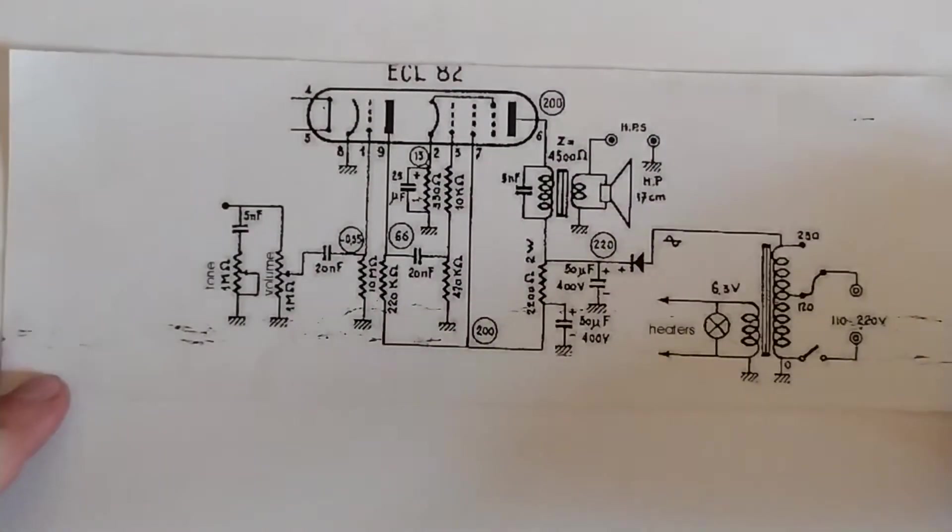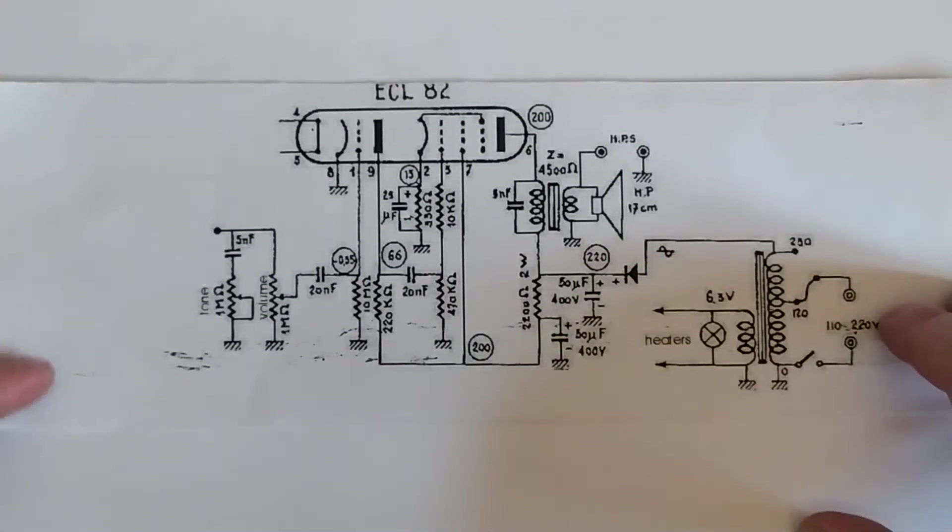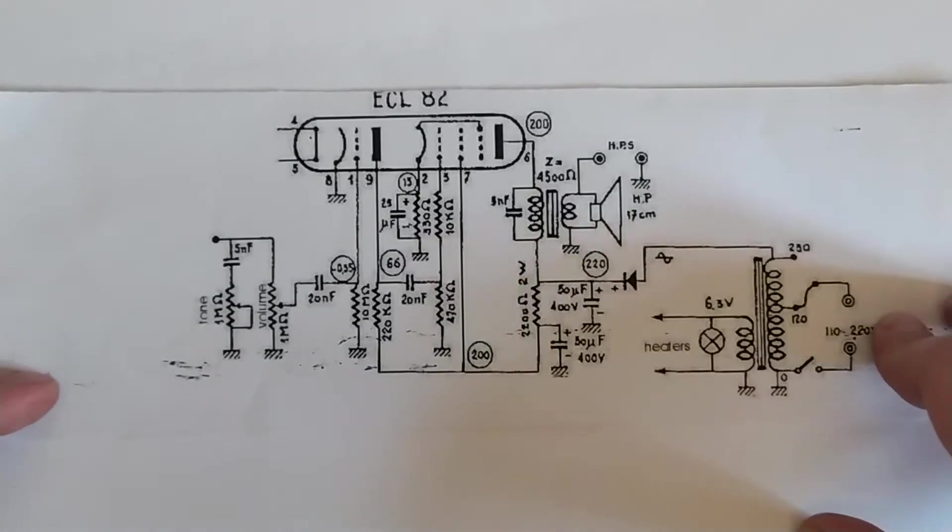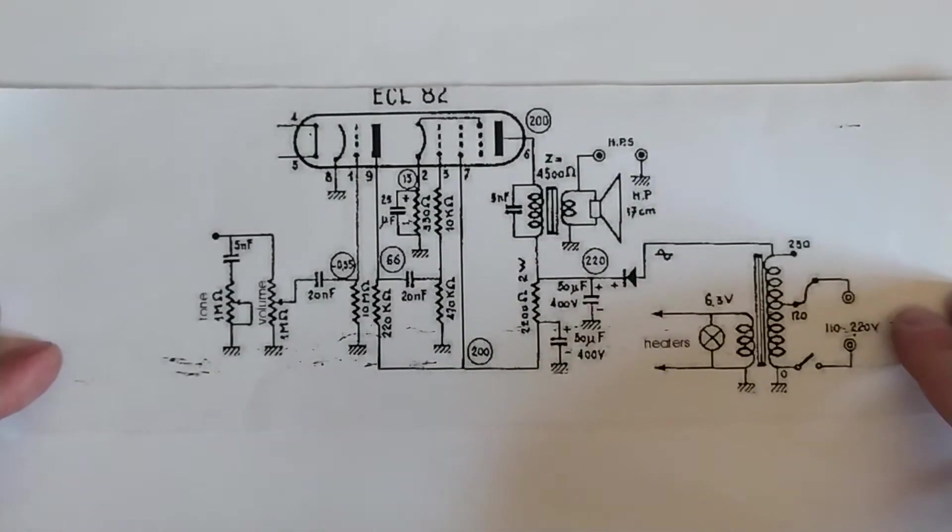What we want to do now is design an amplifier. Normally you'd have to go into the datasheet and plot load lines and do all sorts of stuff, but this tube was very much used in early television receivers. There's quite a variety of schematics of television receivers out there that you can at least take inspiration from.